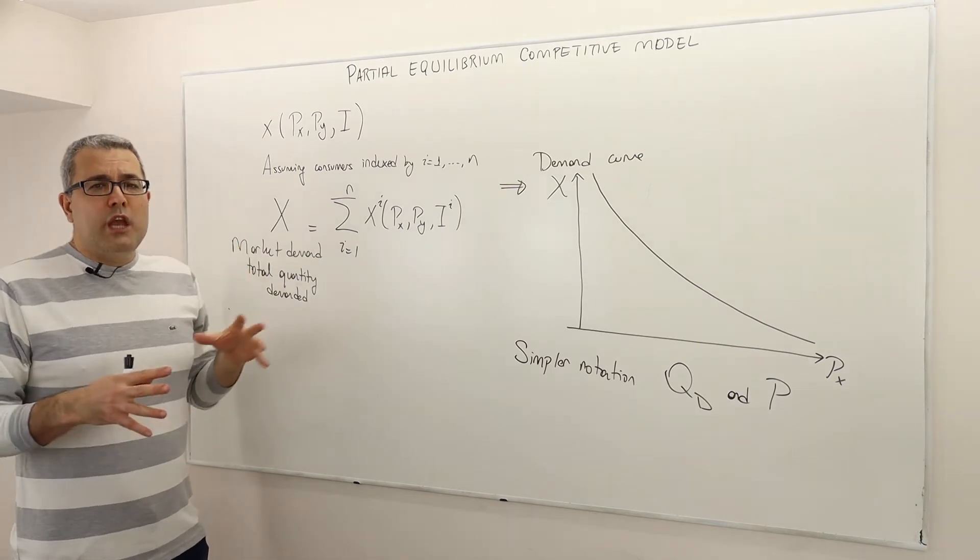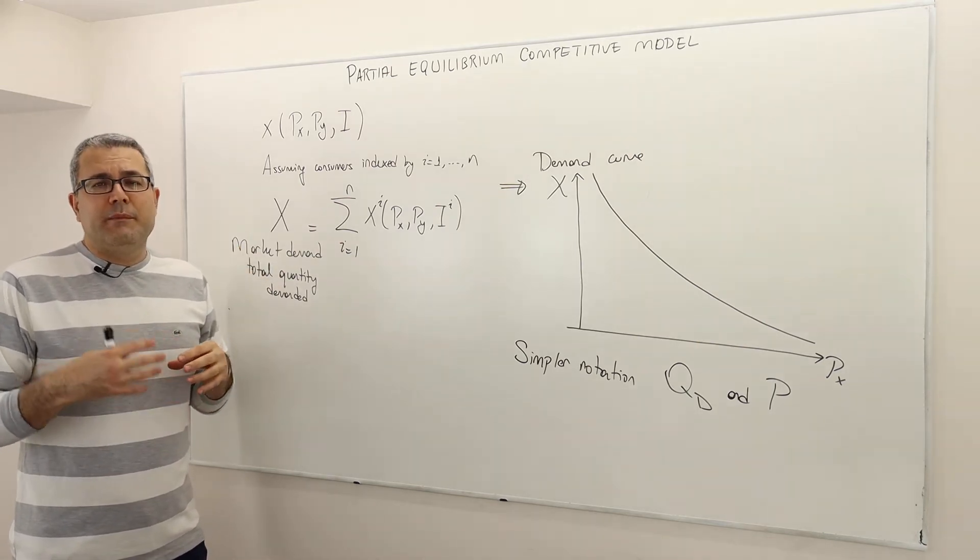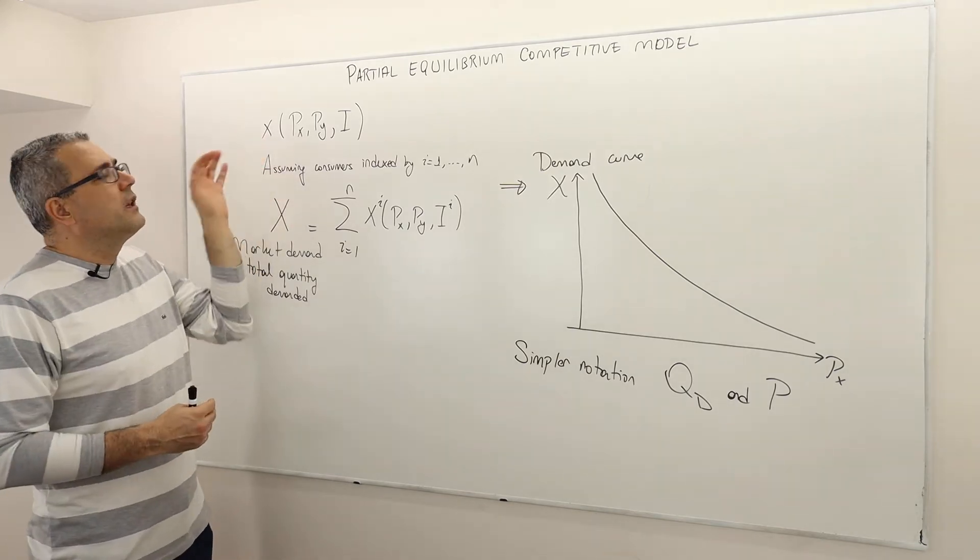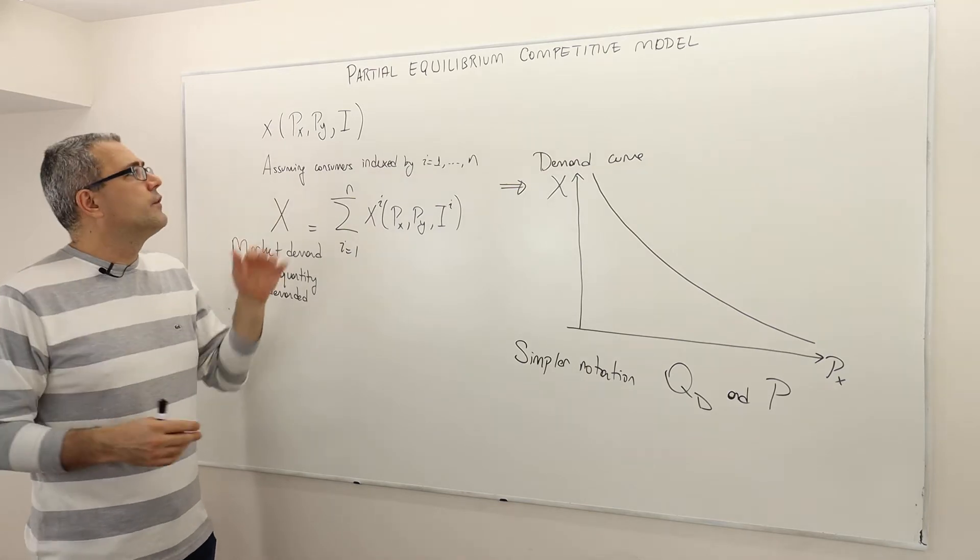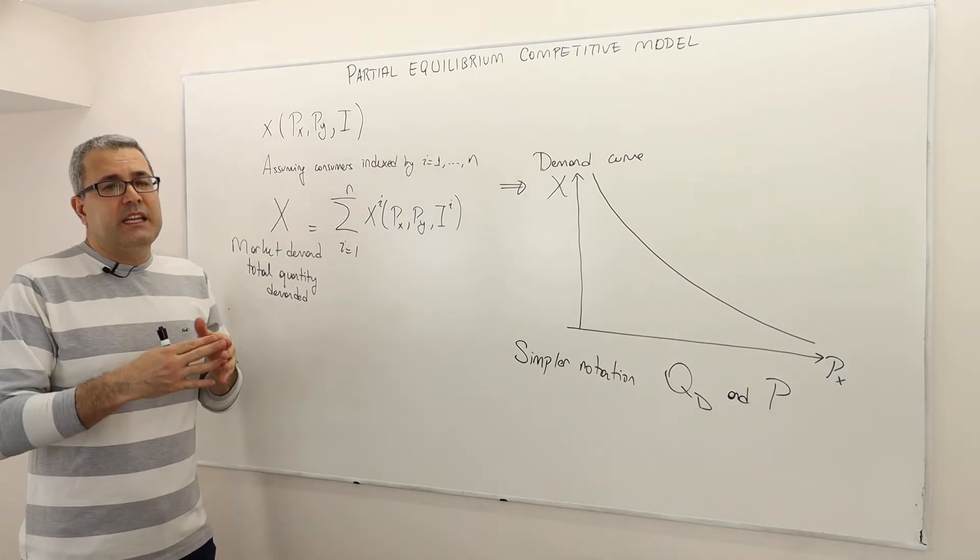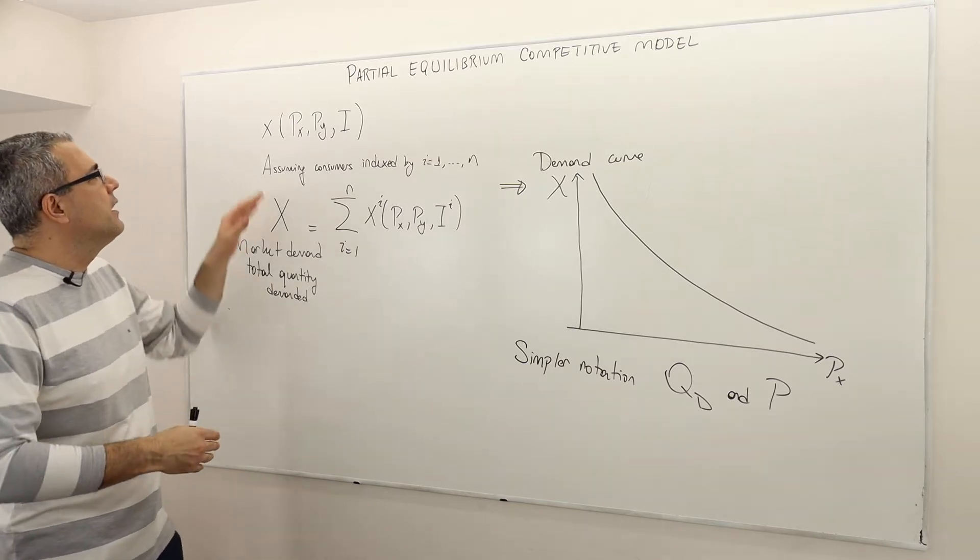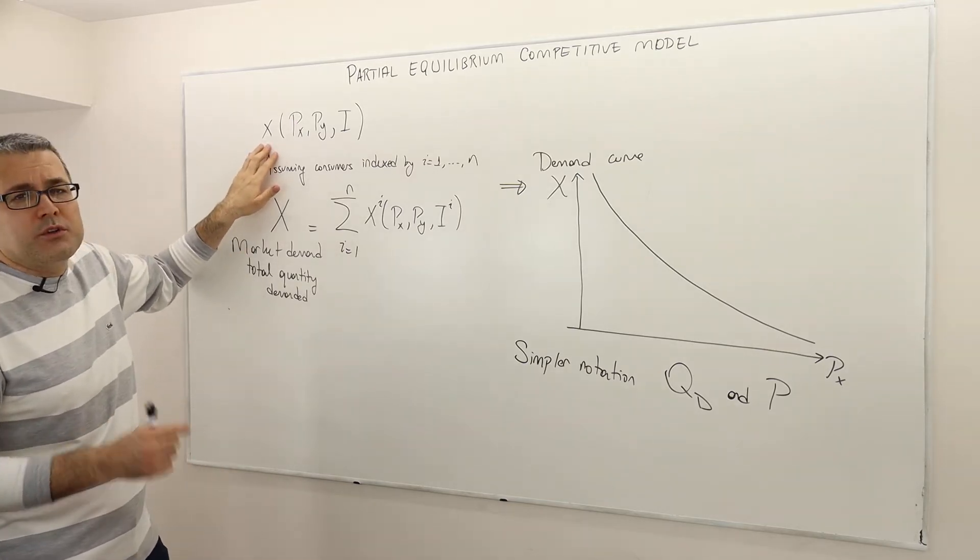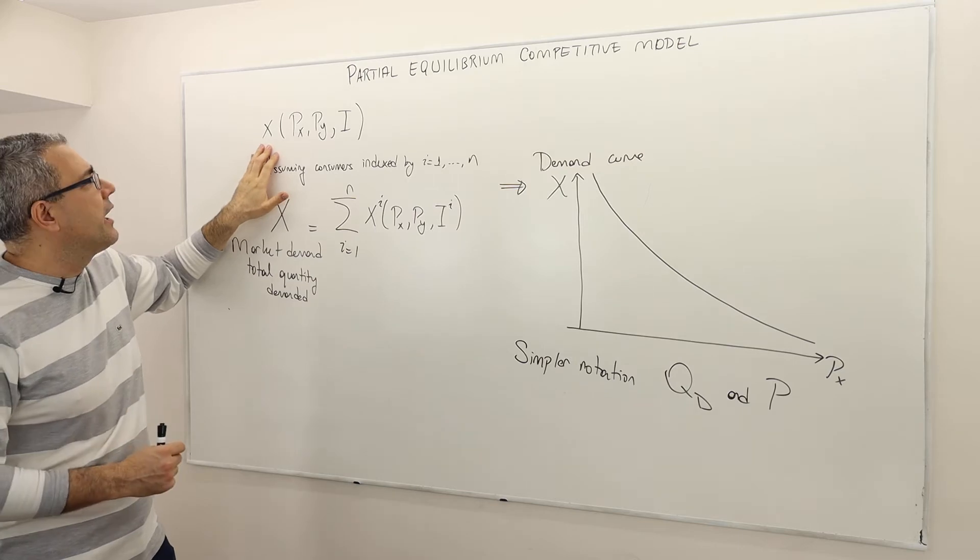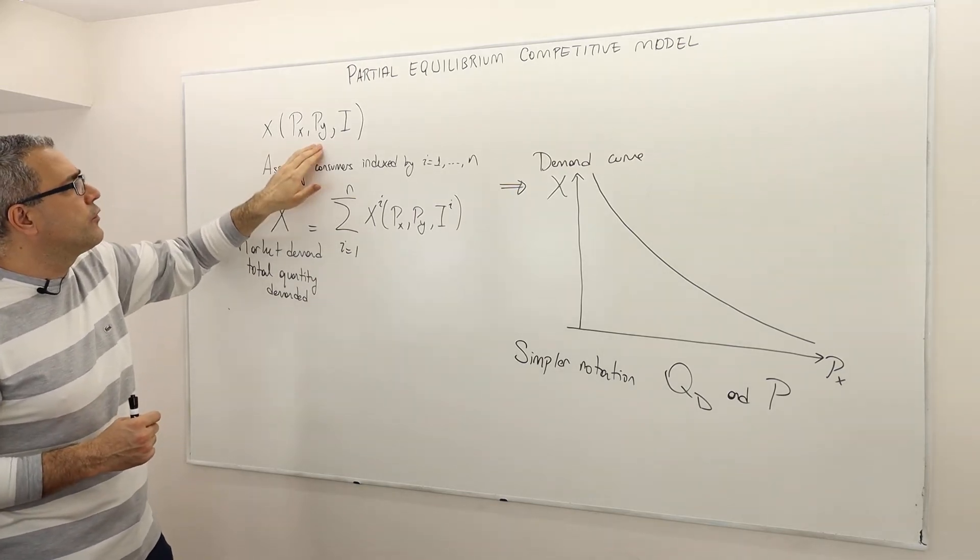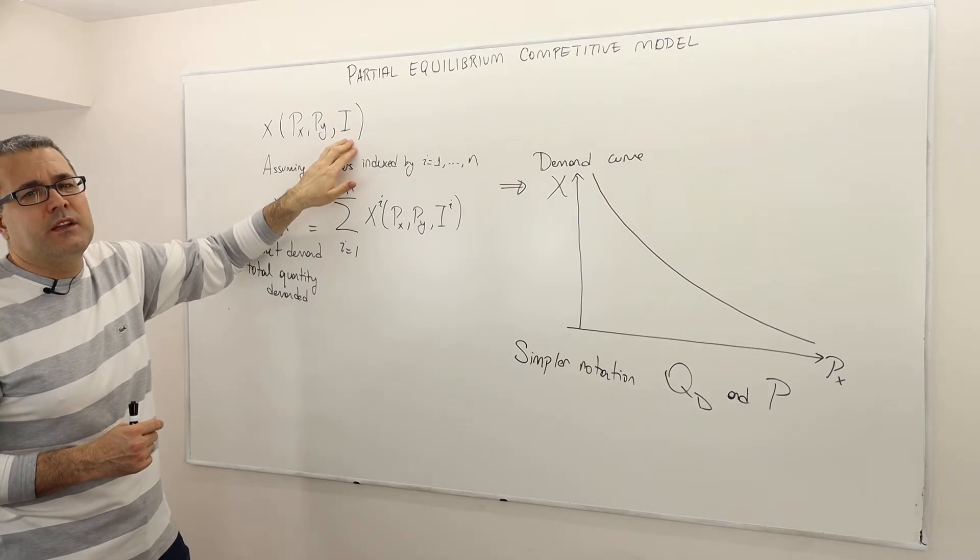Therefore, we will be talking about Marshallian demands. We know from the consumer's utility maximization problem how to derive a Marshallian demand curve. So let's suppose there are two goods, but we can easily extend the logic to more than two goods. Let's focus on one particular good, say good X. Good X demand depends on the price of good X, price of good Y, and income of that consumer.